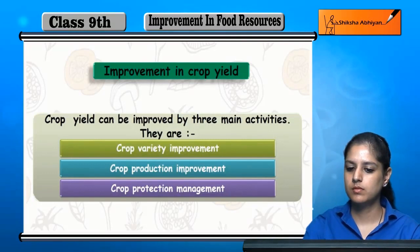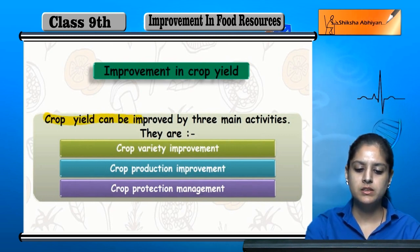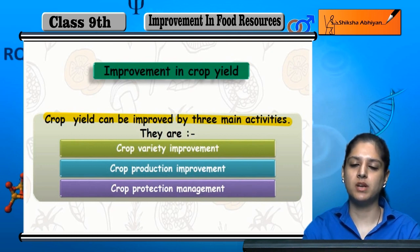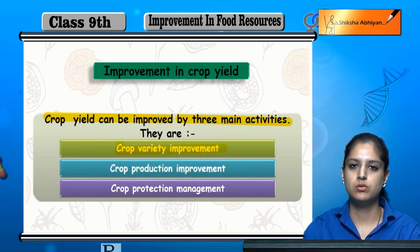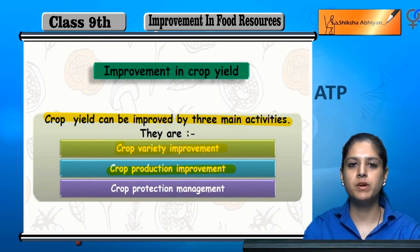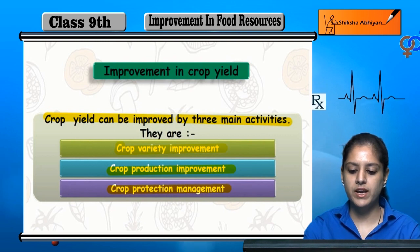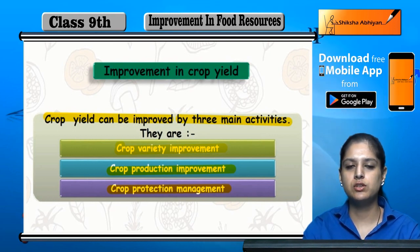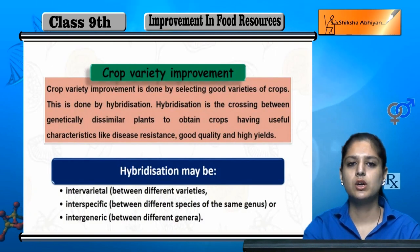A popular topic is improvement in crop yield. Crop yield can be improved by three main activities: crop variety improvement, crop production improvement, and crop protection management. After the crop grows, it is very necessary to protect it and ensure crop yield improvement.